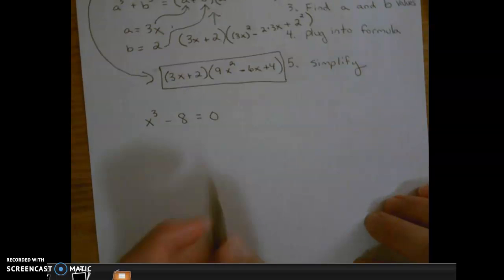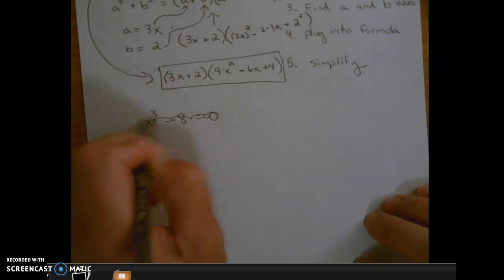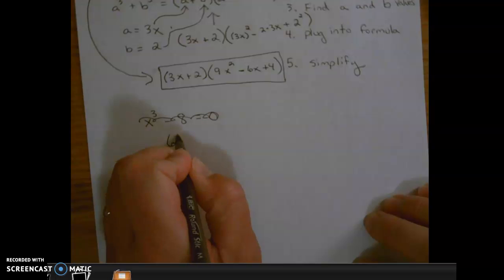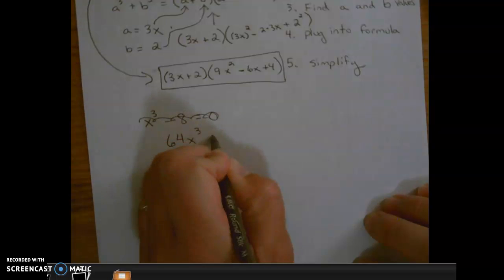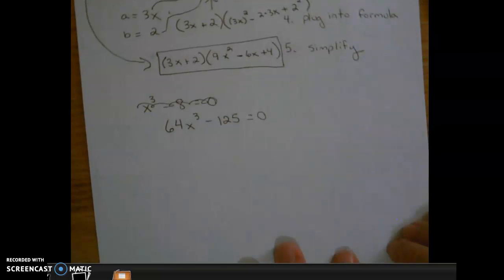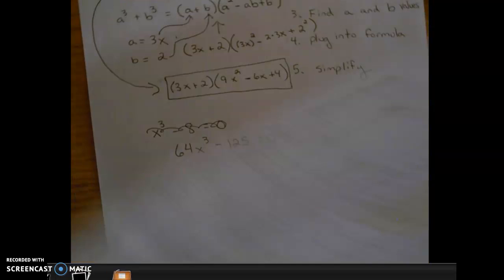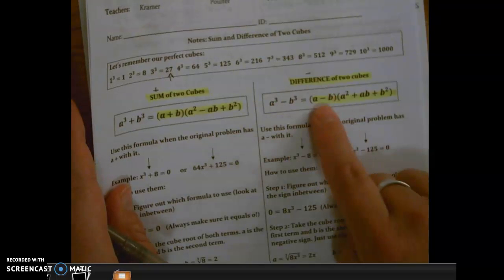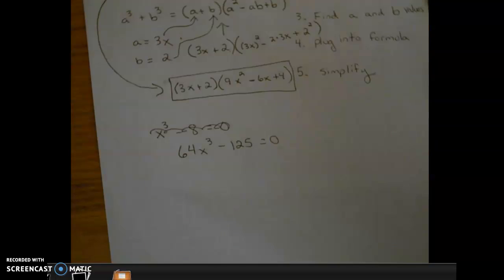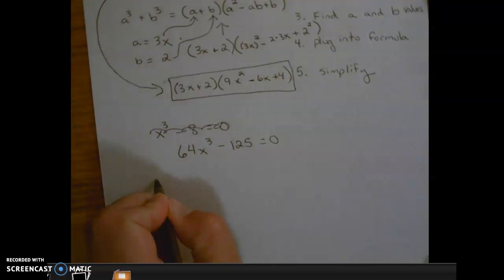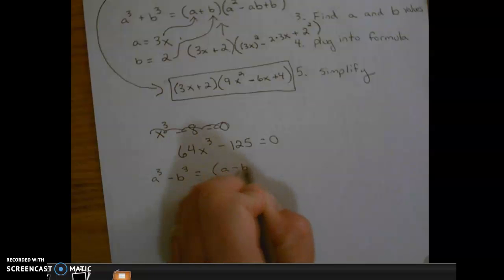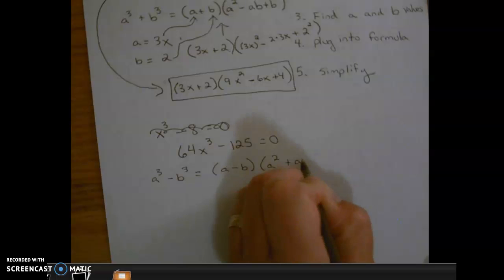Let's take a look at another example. Actually, let's do a different one. I changed my mind. Let's do one that looks like this: x³ - 125 = 0. First thing we want to do, sum or difference? Difference. Number two, write the formula. We get the formula from our packet. Here's the difference of two cubes.